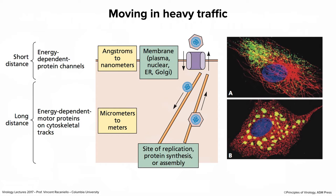For long-distance transport, you need to use motor proteins on cytoskeletal tracks, which we discussed during virus entry. Endosomes move down cytoskeletal tracks — the motor proteins attach to the vesicle and to the track, and their movement requires energy. It's the same way that particles or subviral particles moving from the nucleus to the plasma membrane also move along these cytoskeletal tracks, typically microtubule-based, and motors move those along as well.